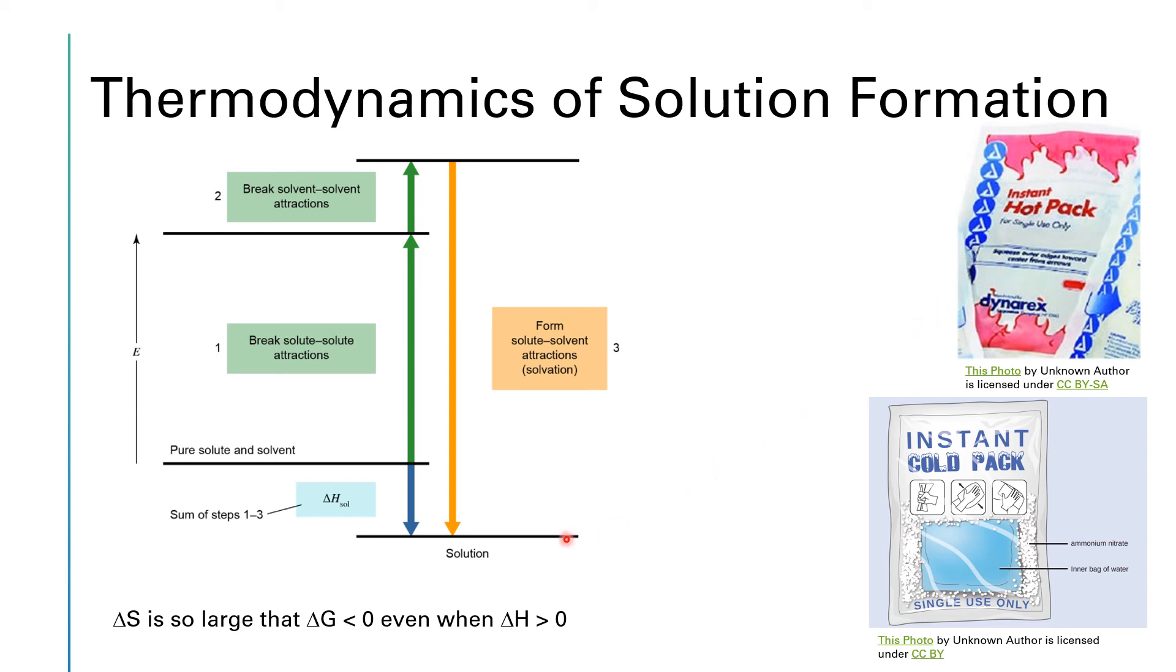In that case, instead of ending up at an energy level for the solution that's down here, we would end up at an energy level maybe up here, which is a little bit higher in energy. Let me go ahead and mark that with a pen. So if in the end, the energy level of the solution ends up being something like this, then delta H for the overall process would be positive.